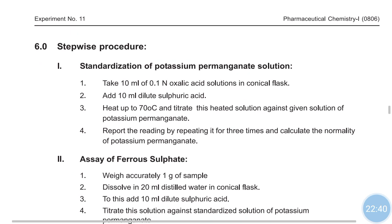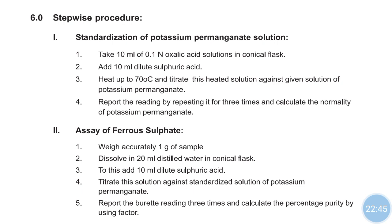The stepwise procedure: first is the standardization of potassium permanganate solution. In the conical flask take 10 ml of 0.1 normal oxalic acid, add 10 ml of dilute sulfuric acid, then heat to 70 degrees centigrade to accelerate the rate of reaction. Then titrate this heated solution against the given KMnO4 solution. KMnO4 itself acts as an indicator. From the readings, we can find out the normality of KMnO4.